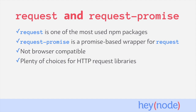In the ecosystem today, there are a lot of choices for a library to help you make HTTP requests. Request Promise happens to be my personal favorite when working on the backend, because of its relative simplicity and the wide availability of examples that already exist using the package.